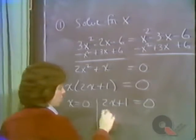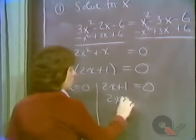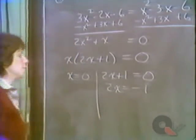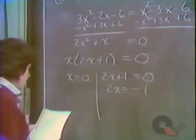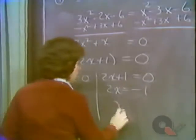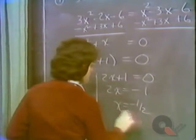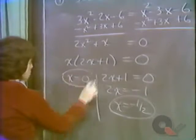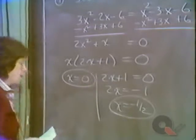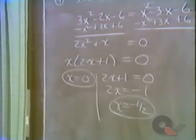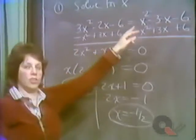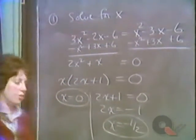The first factor gives us x equals zero. The second gives us 2x equals minus 1, and x equals minus one-half. So we have two solutions: x equals zero and x equals minus one-half. You can go back to the original equation and check these two.